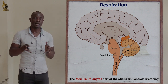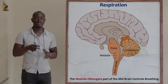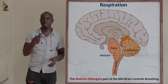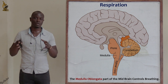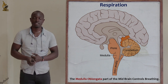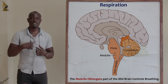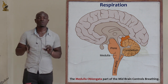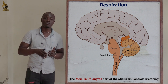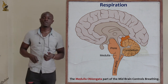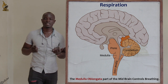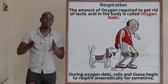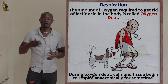You breathe hard and fast because lactic acid is poisonous to the cells. The brain knows that if lactic acid continues building up, it will poison the cells, and if the cells die, the brain itself will die. So the brain increases the breathing rate for you to take in a lot of oxygen, which then breaks down the lactic acid in the body. Debt means something you owe and must later pay.